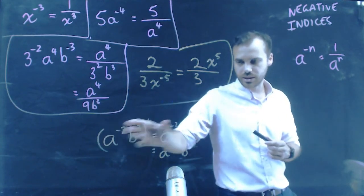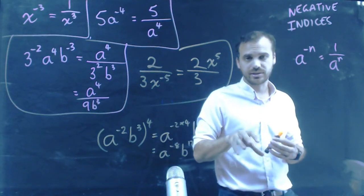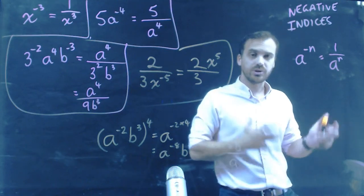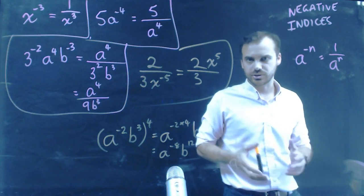So, you can see I've got one index law that I've used, and then I'm using my negative indice law. You've got eight laws to use, seven at the moment, but you will have eight. You've got eight laws to use, and each of them can get used in any kind of question.